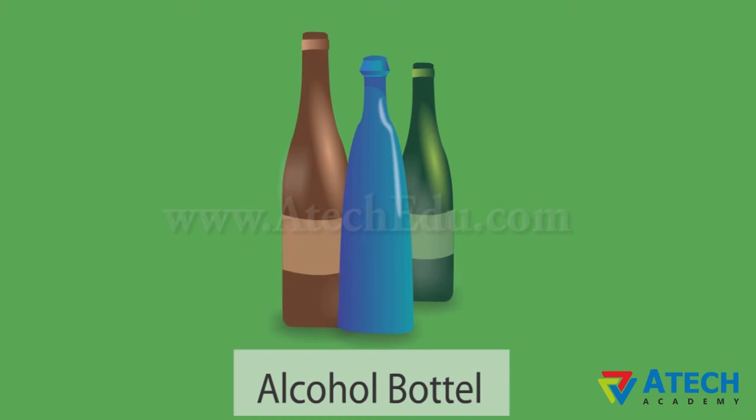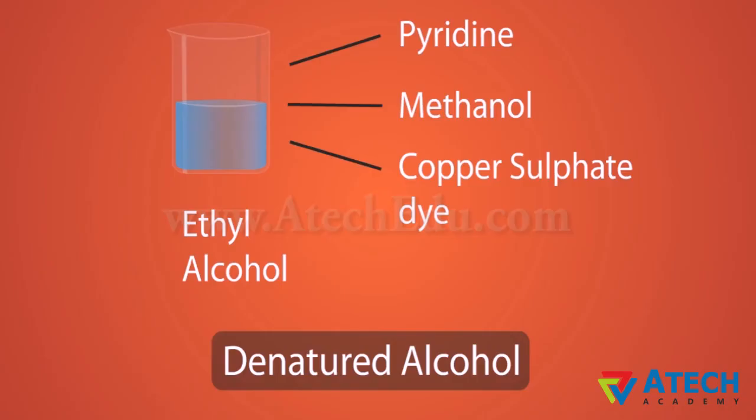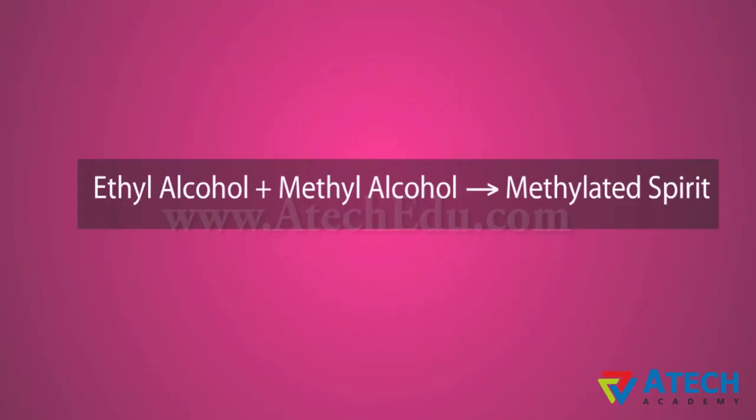There are long-term harmful effects of consumption of alcohol. Excess of alcohol affects lungs of a person and may lead to death. Unlike ethanol, intake of methanol in very small quantities can cause death. To make alcohol unsuitable for drinking, certain poisonous substances like pyridine, methanol and copper sulphate dyes are added to it. This is called denatured alcohol. Methylated spirit is ethyl alcohol to which some methyl alcohol has been added to make it undrinkable.